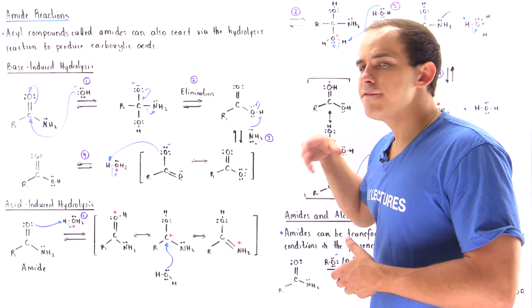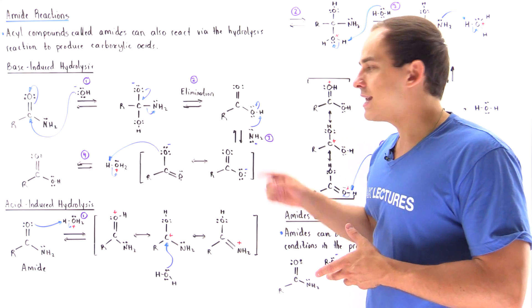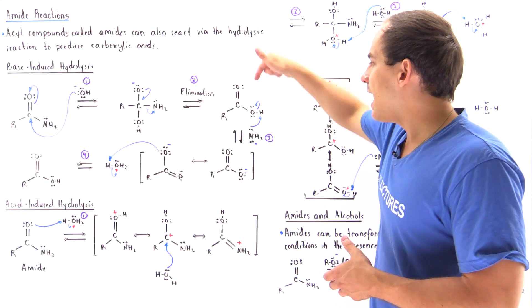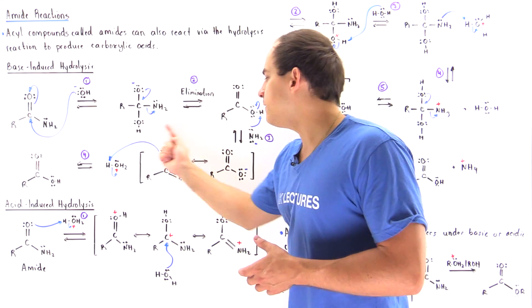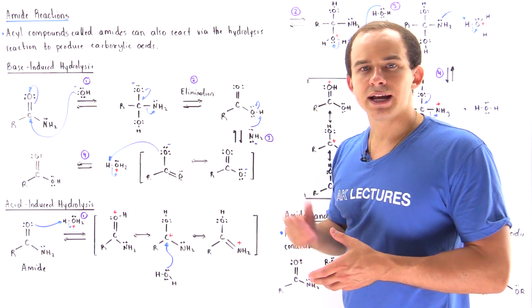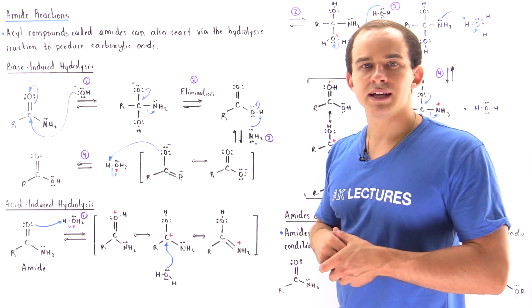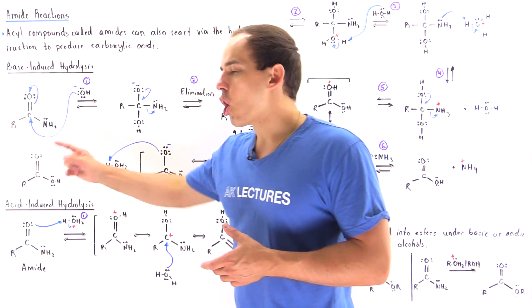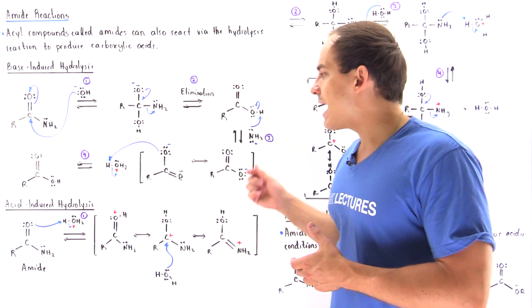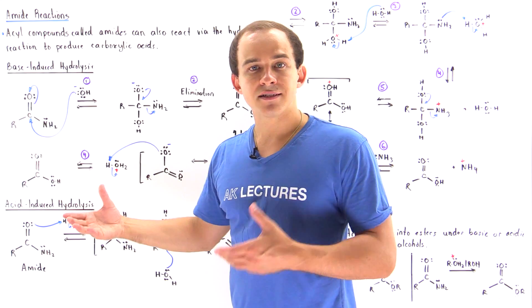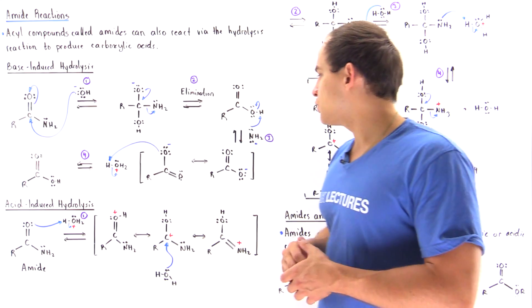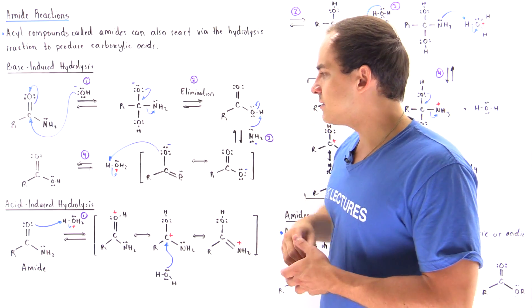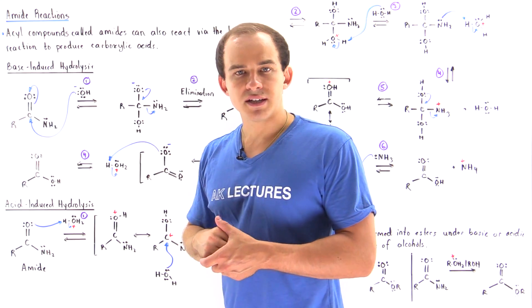The NH2 anion is a very strong base and it will deprotonate the H off of our oxygen. In step three we form our carboxylate ion. In a final step, to actually form the carboxylic acid, we add an acid such as hydronium, which protonates the oxygen to form the carboxylic acid.